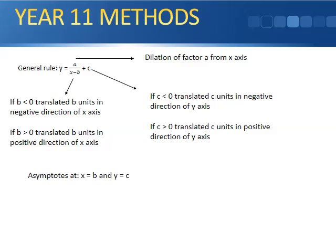The general rule becomes a/(x - b) + c. The value 'a' is the dilation factor from the x-axis. The (x - b) term translates the graph either in the negative or positive direction of the x-axis — use those words rather than left or right. The + c term translates it in either the positive or negative direction of the y-axis, just like before.